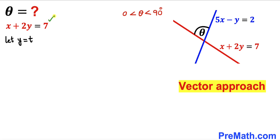Then this equation is going to become, if I substitute y by t, this is going to become x plus 2t equals to 7. And if I move this 2t to the other side, x is going to be equal to